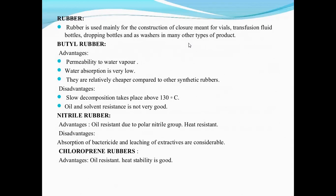Nitrile rubber — advantages: oil resistant due to polar nitrile group, and heat resistant. Disadvantages: absorption of bactericide and leaching of extract juice are considerable. Chloroprene rubbers — advantages: oil resistant, and heat stability is very good.